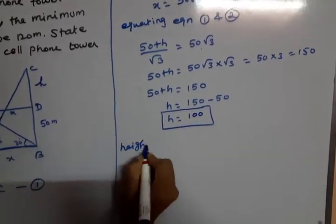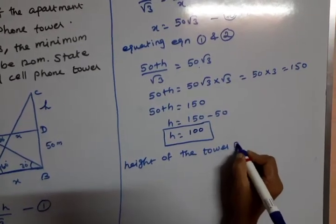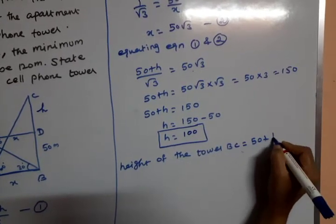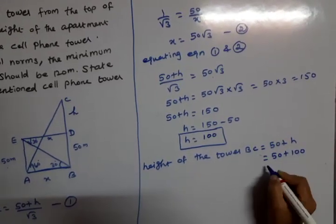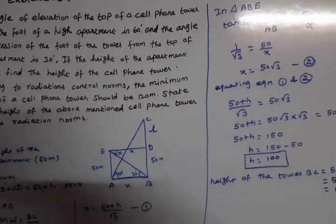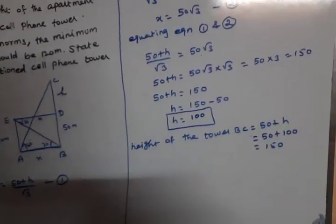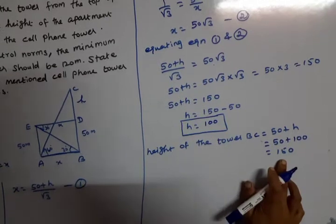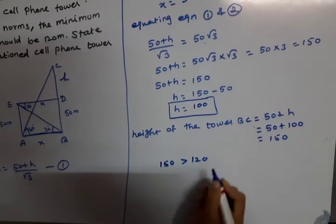So h equals 150 minus 50 equals 100 meters. Therefore BC equals 50 plus 100 equals 150 meters. This is the height of the tower. The radiation control norm requires a minimum of 120 meters. The tower height is 150 meters, which is greater than 120 meters.